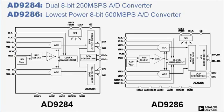These parts offer breakthrough power and performance and are representative of the significant technology advancements by Analog Devices in the high-speed, low-power ADC market. The AD9284 is the industry's first dual 8-bit, 250-megasample per second A-to-D converter, and the AD9286 is the lowest-power 8-bit, 500-megasample per second A-to-D converter available today, consuming just 310 milliwatts.